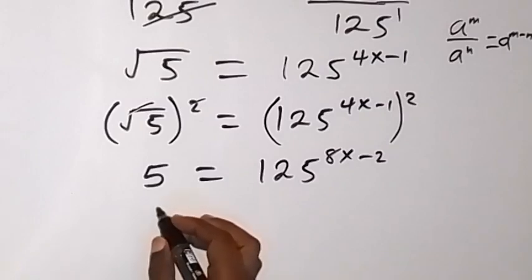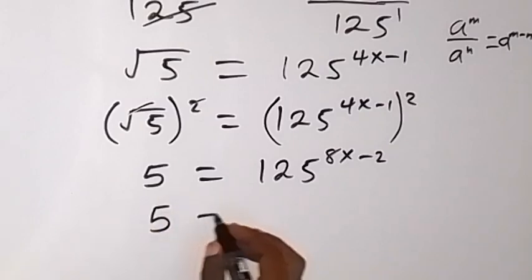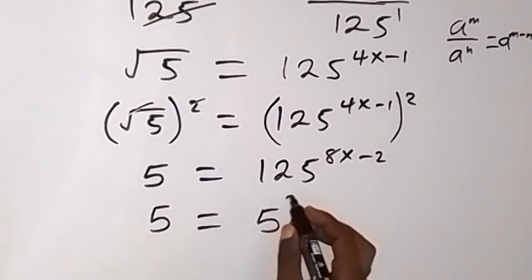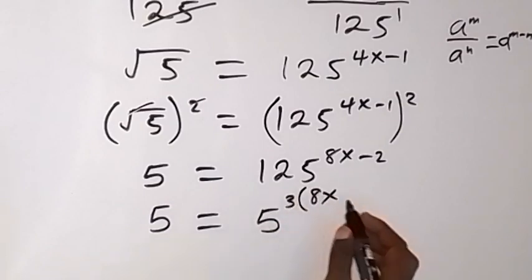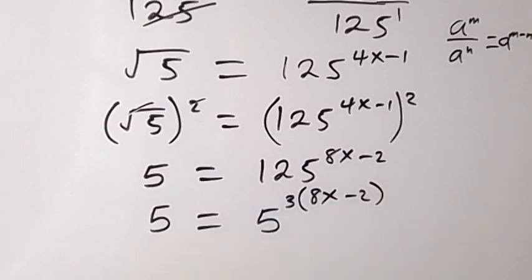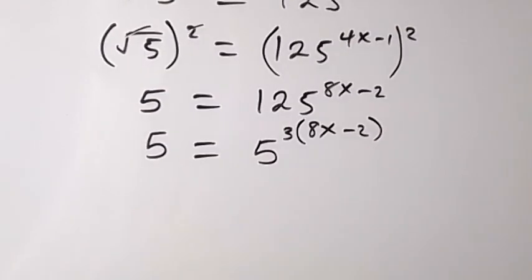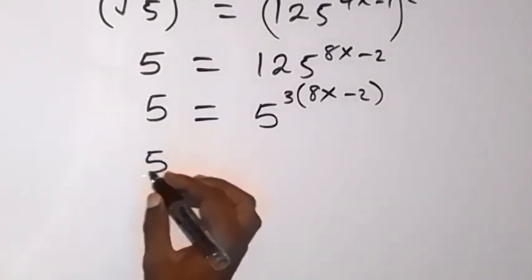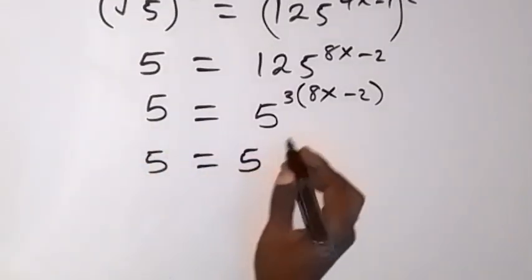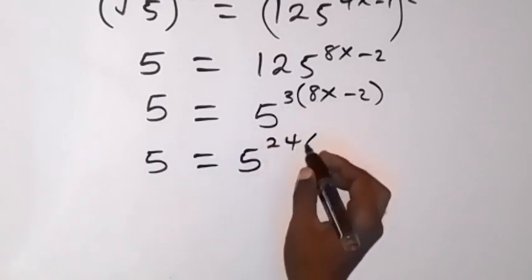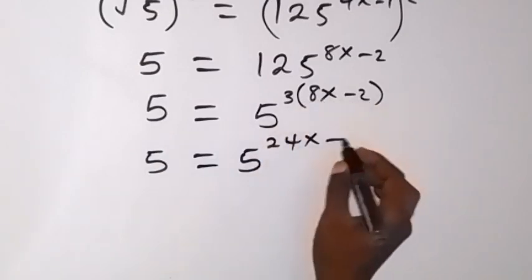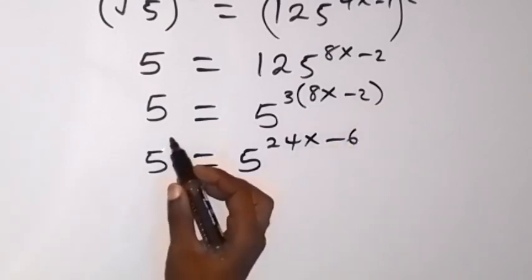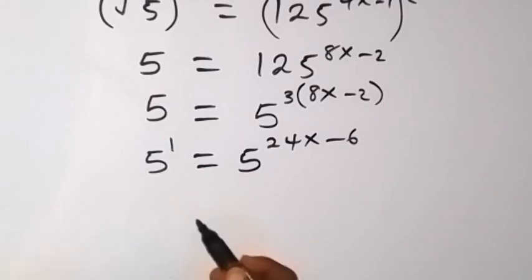Now let's express 125 to base 5. We have 5 equals 125 written as 5 raised to power 3, then raised to power 8x minus 2. Using 3 to open the bracket, this gives us 5 equals 5 raised to power 3 times 8x, which is 24x, then 3 times minus 2 is minus 6.